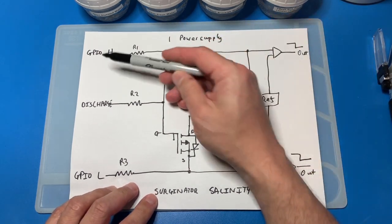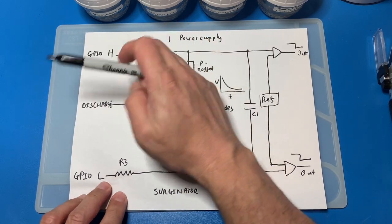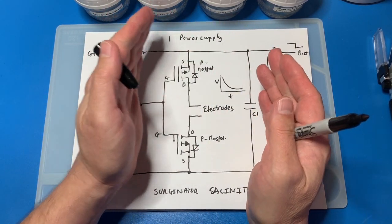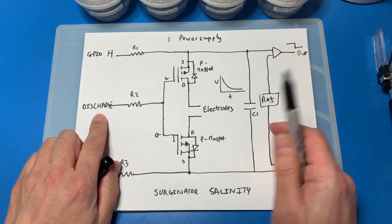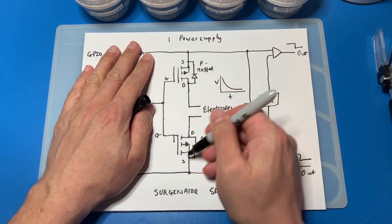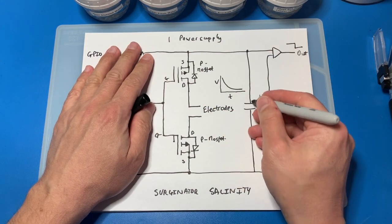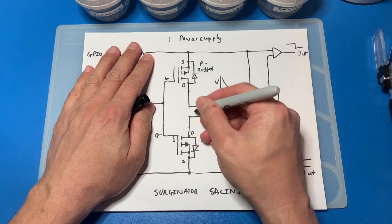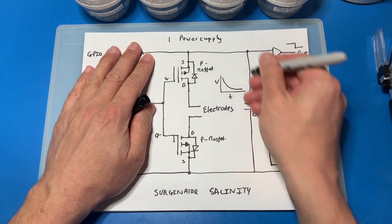And then what happens is we basically go high impedance on both of these two lines here, so that essentially then cuts this part of the circuit off. Then we trigger the discharge low and then that switches the two switches on, and then the capacitor gets discharged through the electrodes in a loop like that.